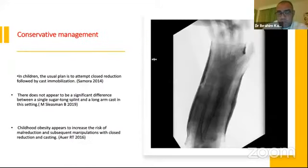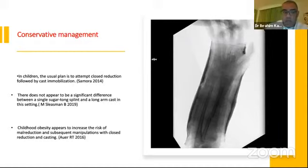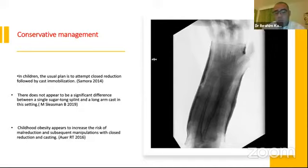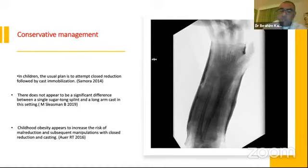For conservative management in children, the usual plan is to attempt closed reduction followed by cast immobilization, as stated by Samora in 2014. There does not appear to be a significant difference between applying a sugar-tong splint or a long arm cast after reduction, except in certain circumstances. If we have an obese child, Ayer in 2016 noted that childhood obesity appears to increase the risk of malreduction and subsequent manipulations with closed reduction and casting.